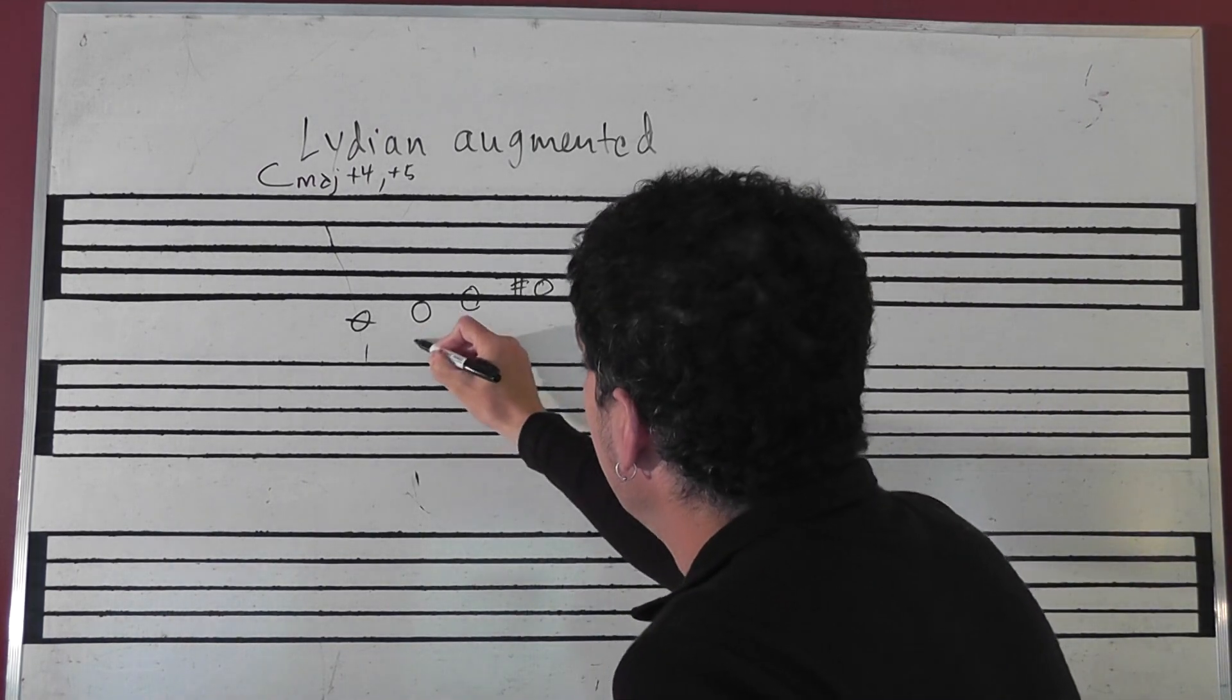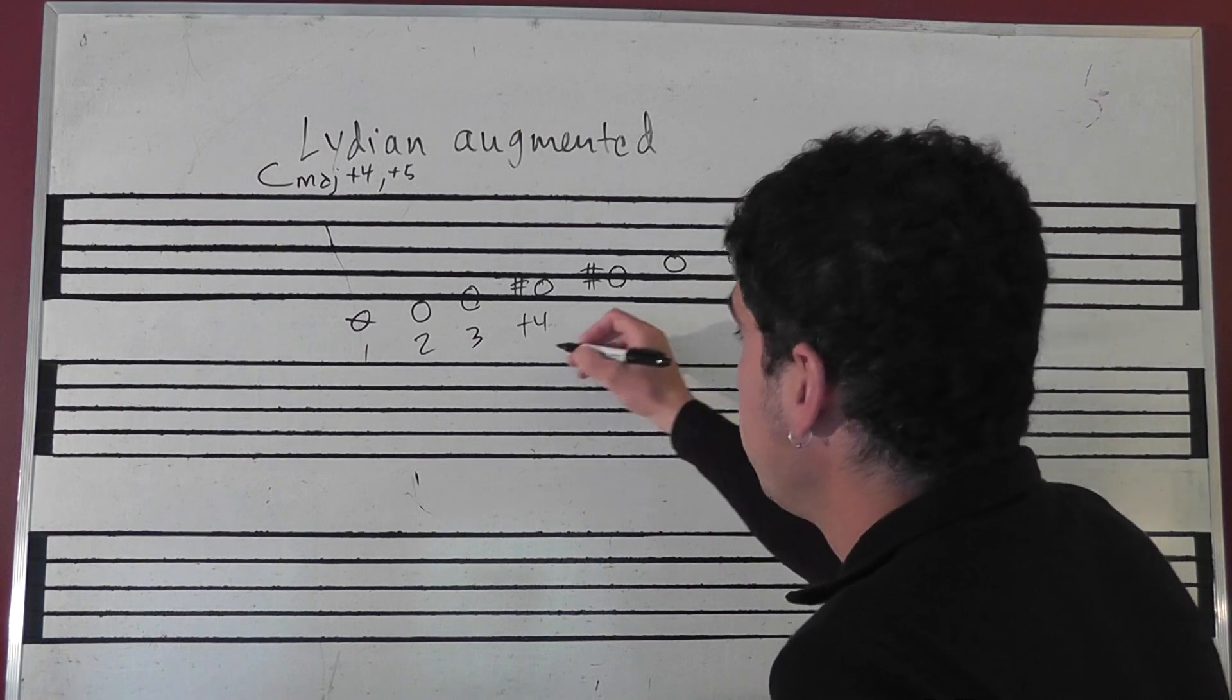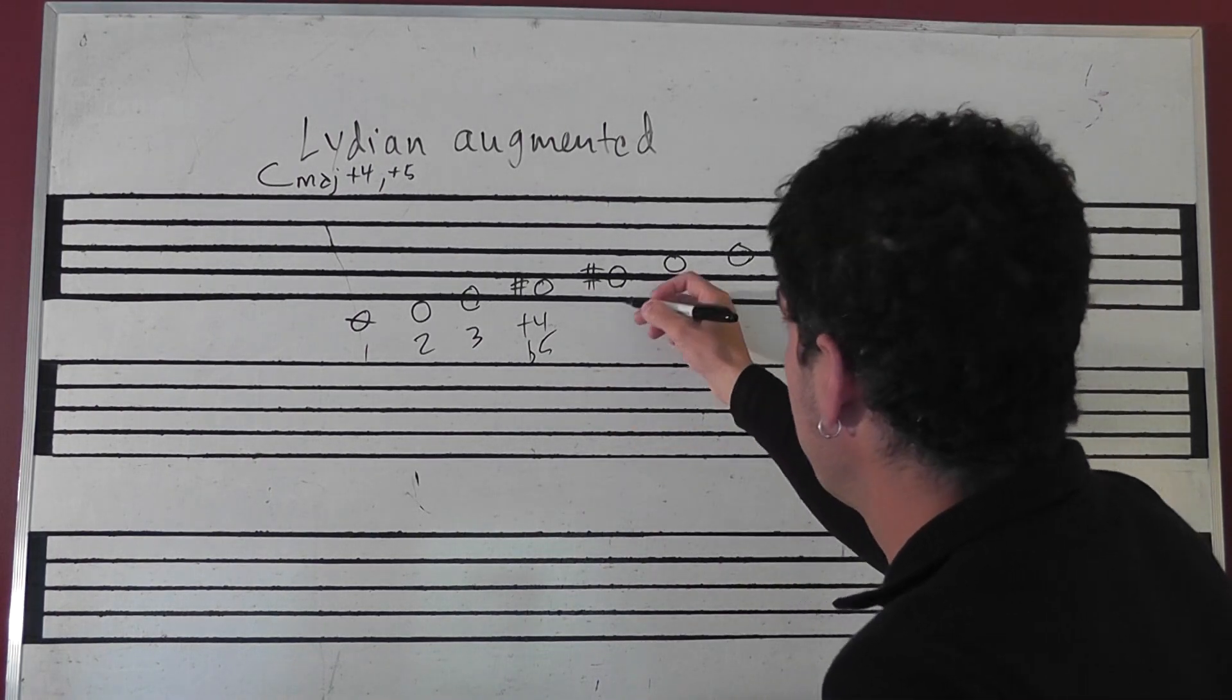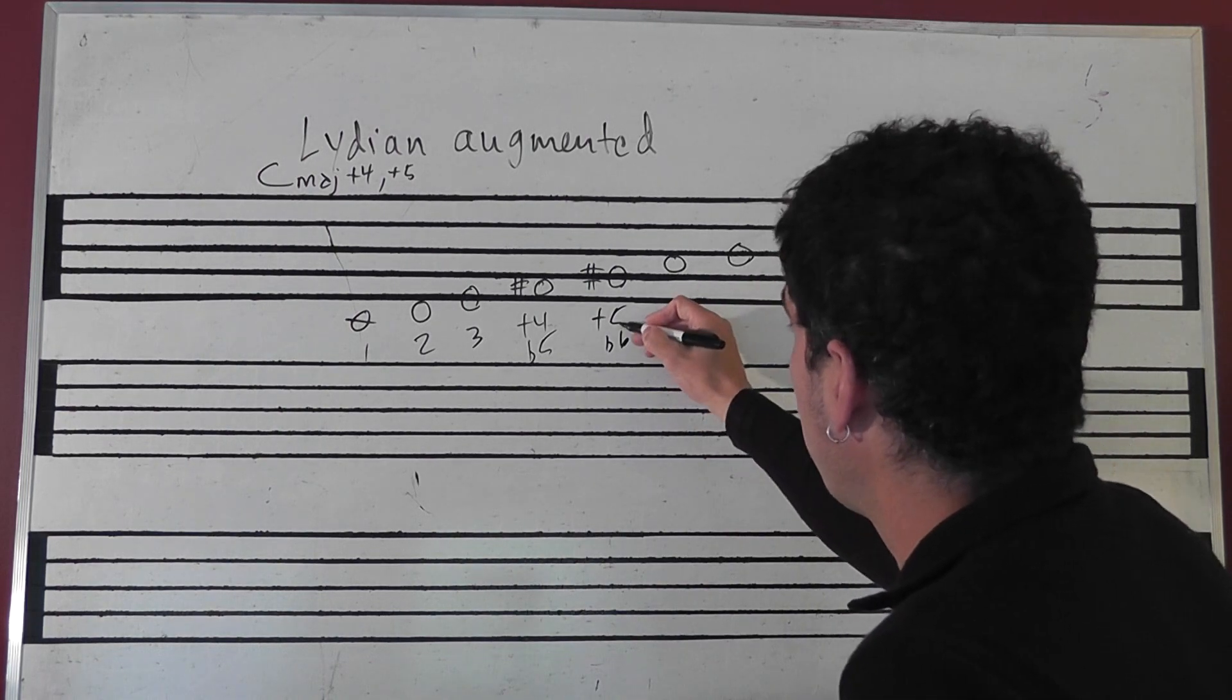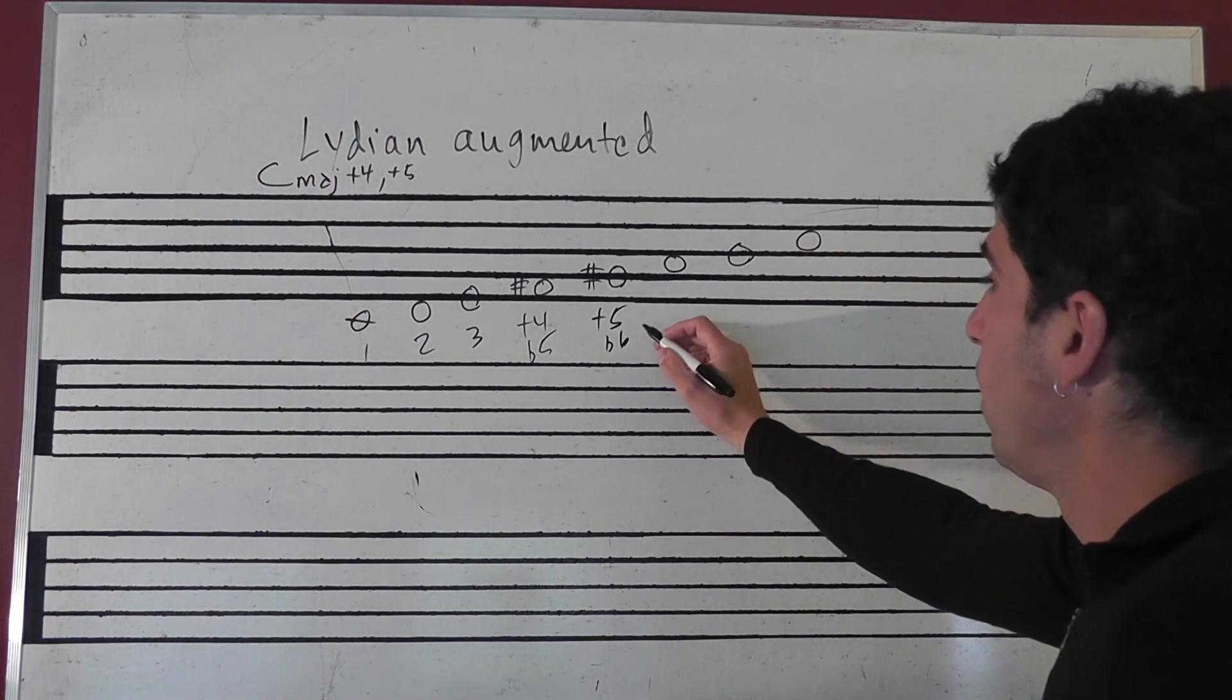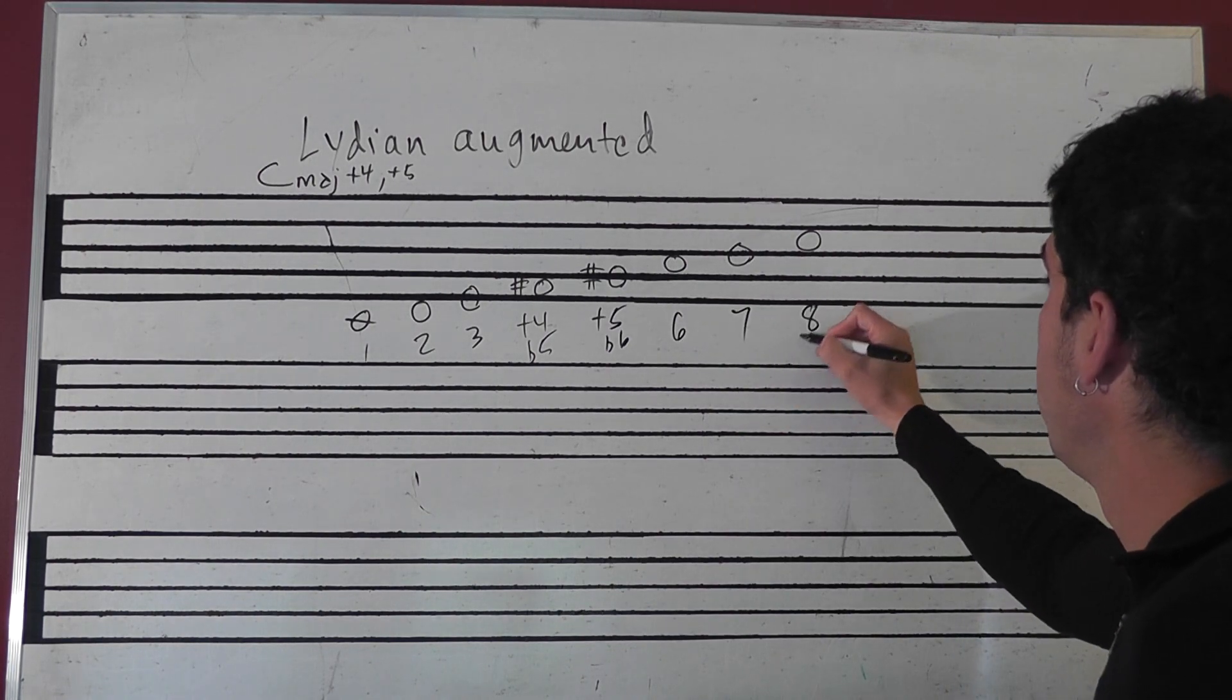So we've got one, two, three, plus four - you could call that flat five if you want. You could call this plus five or flat six, whatever you want to call it, it doesn't really matter. We've got six, major seven, and eight or one.